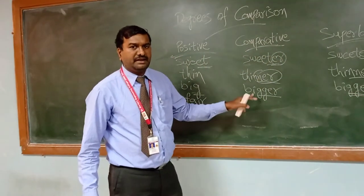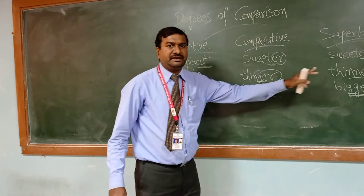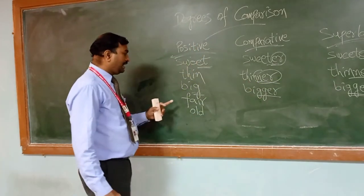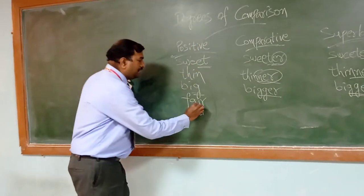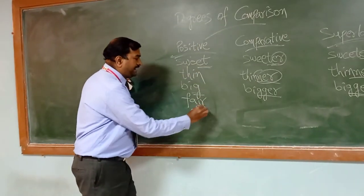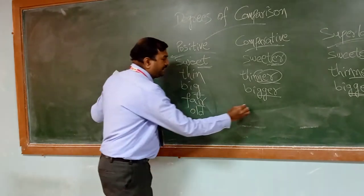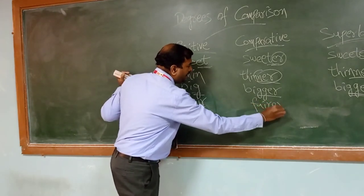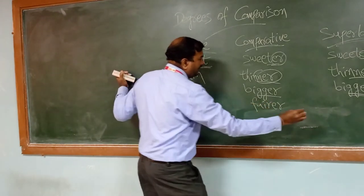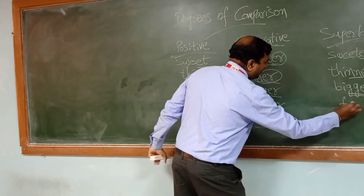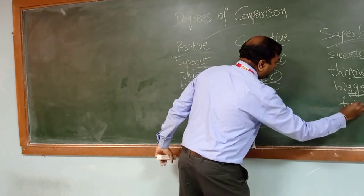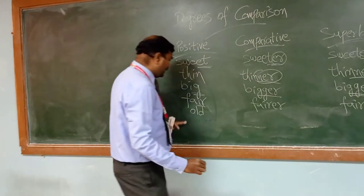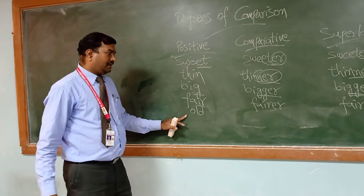The consonant letters are doubled in comparative and superlative degrees. For 'fair': by adding ER it becomes 'fairer' (F-A-I-R-E-R), and the superlative is 'fairest' (F-A-I-R-E-S-T).